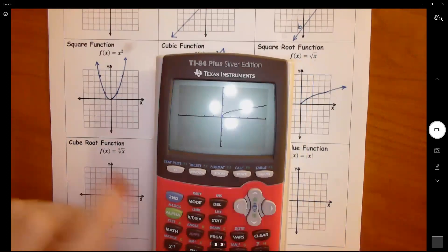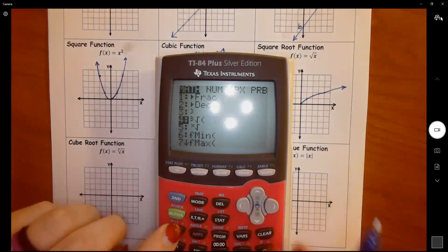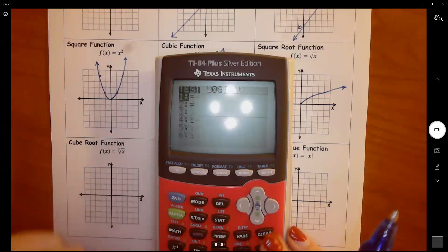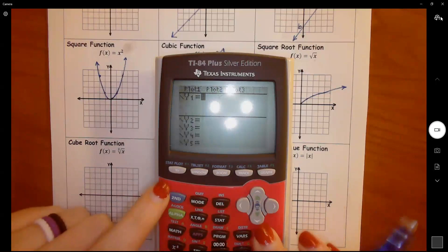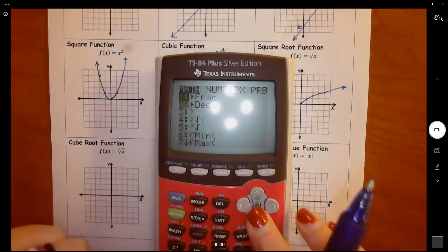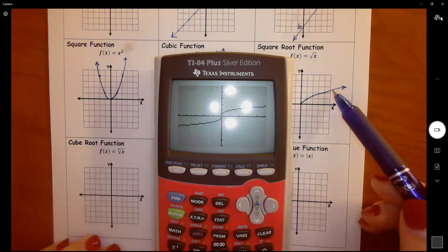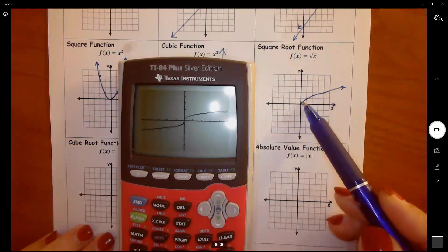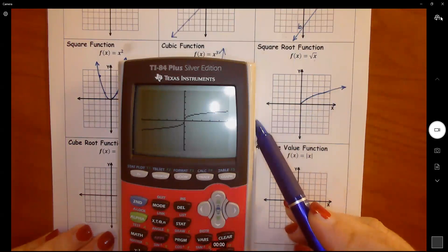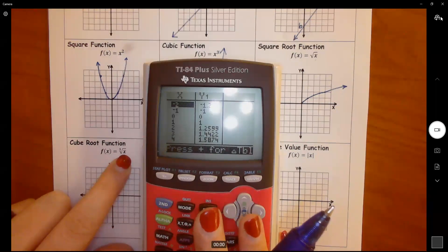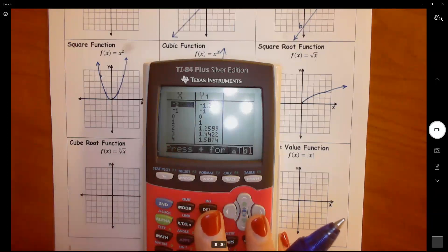So next we have the cubic root of x. It kind of looks like this one, right? But instead of stopping here, now it comes this way and it changes directions and it comes out this other way. The reason is we can have a cube root, a fifth root, a seventh root. We can have odd roots that have negatives under here.